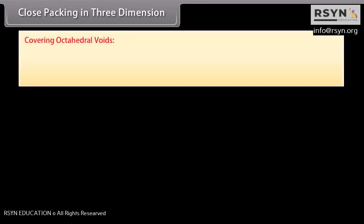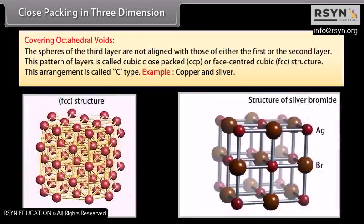Option 2: Covering octahedral voids. The spheres of the third layer are not aligned with those of either the first or the second layer. This pattern of layers is called cubic close packed (CCP) or face-centred cubic (FCC) structure. This arrangement is called C-type. Examples include Copper and Silver.